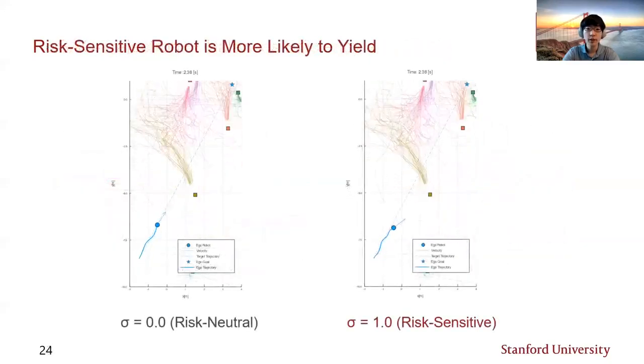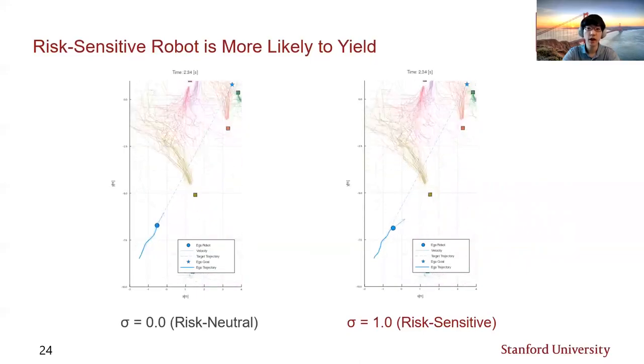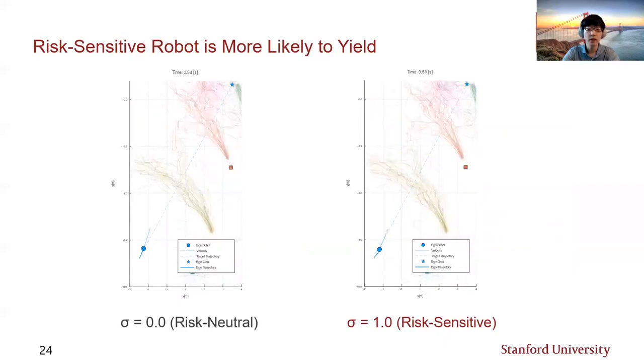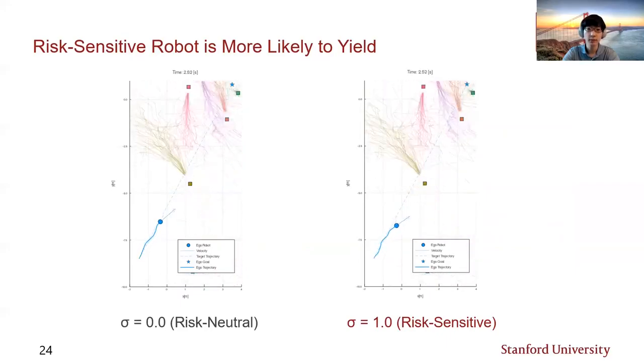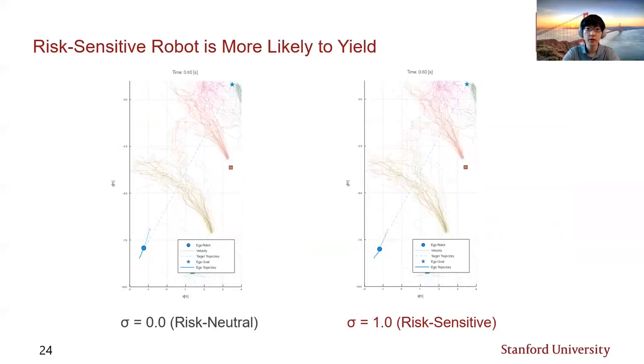Next, we studied the effect of risk sensitivity on crowd-robot interaction. As desired, the empirical results show that a larger value of the risk sensitivity parameter results in a higher probability of yielding to oncoming humans. This is reasonable since a risk sensitive robot is penalized by being in a state with high uncertainty. This suggests that the risk sensitivity parameter adds an additional degree of freedom in choosing desirable robot behavior at runtime.